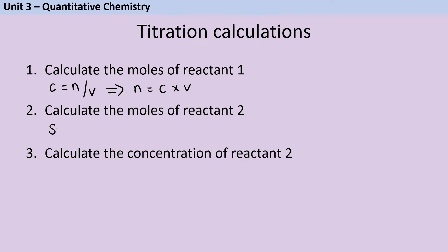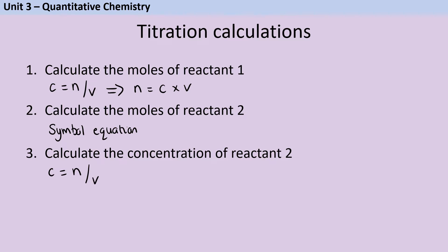Next we're going to use the symbol equation and specifically the coefficients within it — those are the large numbers in front of the different reactants. Those tell you the ratio in which those reactants react. So if we already know the number of moles of reactant one and we know the ratio with which it reacts with reactant two, we can work out the number of moles for reactant two. Finally we go back to moles divided by volume to work out the concentration of reactant two.